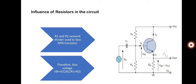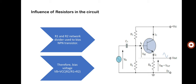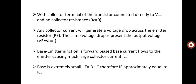Regarding the influence of resistors in the circuit: the R1 and R2 network divider is used to bias the NPN transistor. Therefore, the bias voltage VB is equal to VCC multiplied by R2 divided by R1 plus R2. With the collector terminal connected directly to VCC, there is no collector resistance, so Rc is equal to 0. Between VCC and the collector current IC there is no resistance, so no resistors are connected in between.